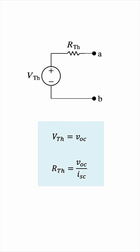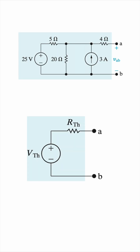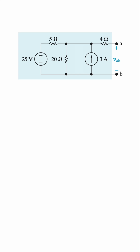For example, we want to find the Thevenin equivalent of this setup over here, with respect to terminals A and B. We would start by finding the open circuit voltage, VAB, and that would be 32 volts in this circuit.